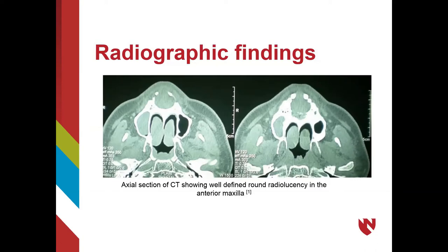This figure is an axial section of a CT scan, showing a round, well-defined radiolucency at the anterior maxilla, towards the top of the picture. The image on the right demonstrates the location of the lesion, which is posterior to the maxillary incisors. Now that we've discussed the radiographic features of the nasal palatine duct cyst, it is important to establish a differential diagnosis when talking about any lesion.